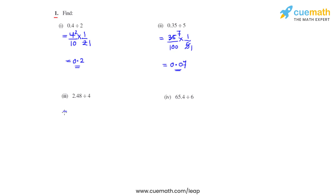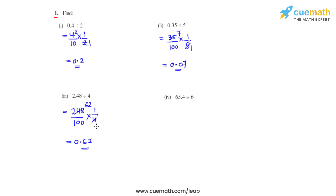Coming to the third bit, we have 2.48 which can be written as 248 divided by 100. Division is replaced with a multiplication sign and 4 has to be flipped so that we get its reciprocal, which is 1 over 4. Now 248 divided by 4 gives us 62, and 62 divided by 100 gives us 0.62 as the answer for the third bit.